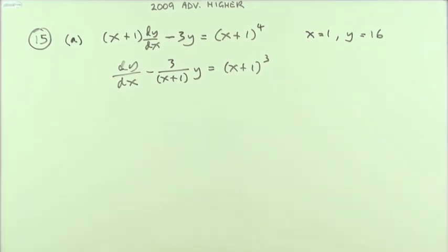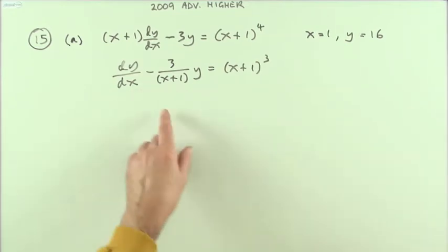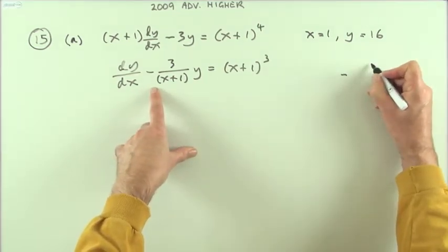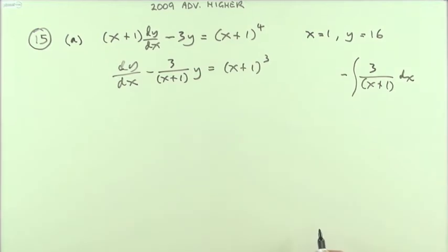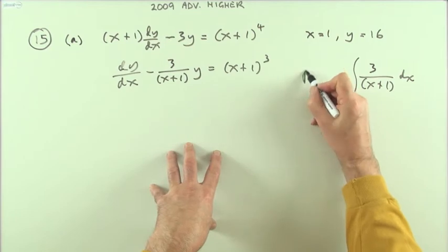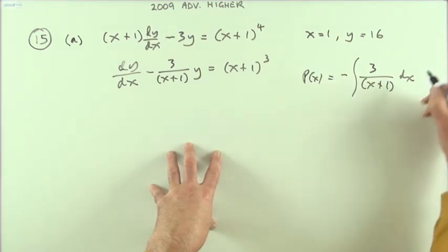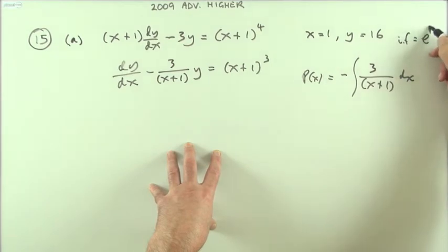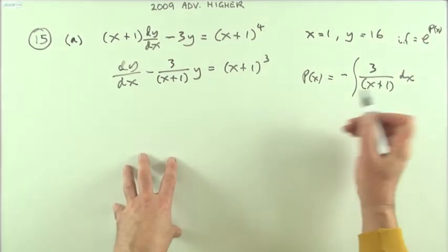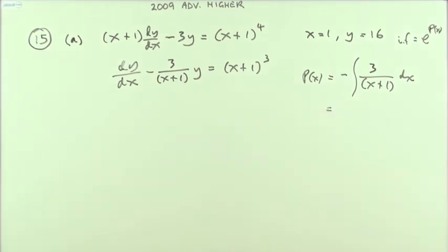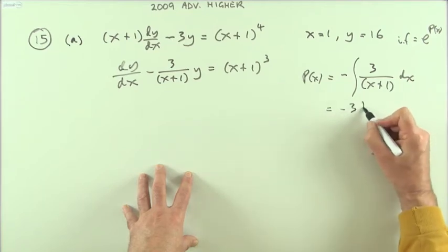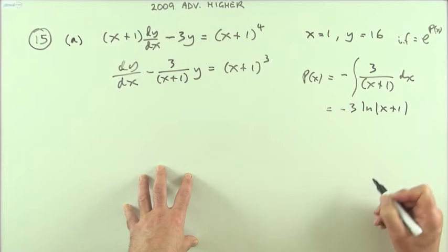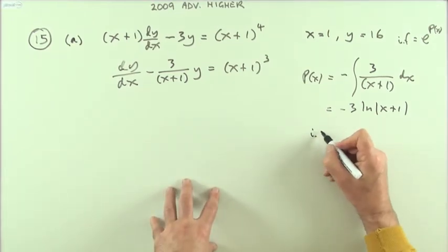Sometimes you use p(x) for that, but effectively this is what would have been the derivative. So I've got negative 3 upon (x+1) and I want to integrate that. If I integrate that and then do e to the power of that — sometimes called e to the p(x) — that's the integrating factor. Integrating gives negative 3 ln(x+1), and now I want e to the power of that.